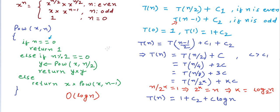There was a similar problem we had solved: calculating modular exponentiation. In that problem, we solve the same recurrence relation T(n) equals T(n/2) + c. So the complexity for that algorithm is O(log n) as well. Order of log n is the best time complexity to have. Thanks for watching.